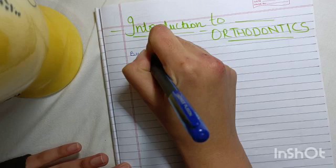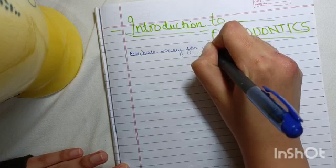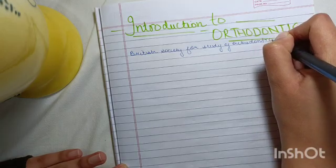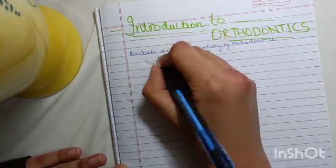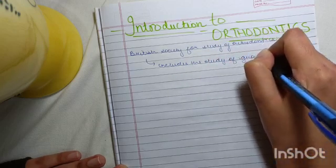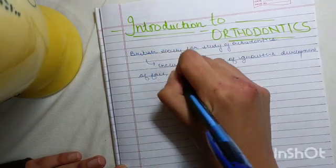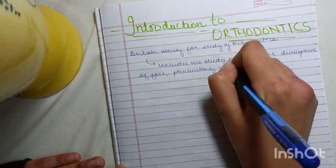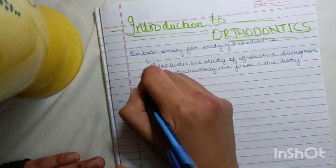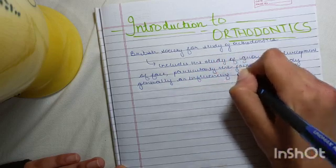According to the British Society for Study of Orthodontics, orthodontics includes the study of growth and development of the face, particularly the jaws and the body generally, as influencing the position of teeth.